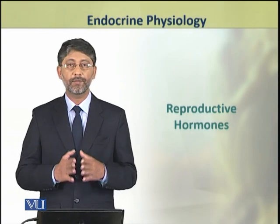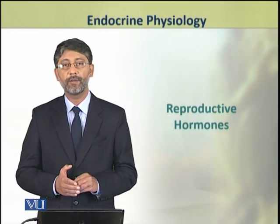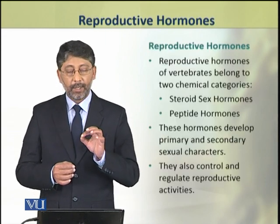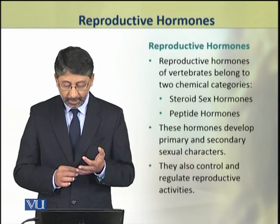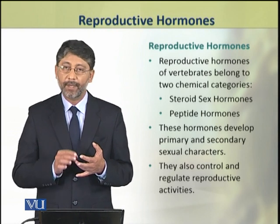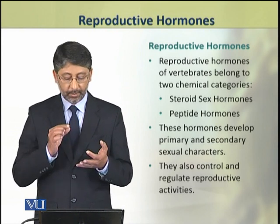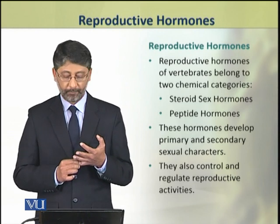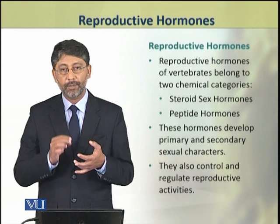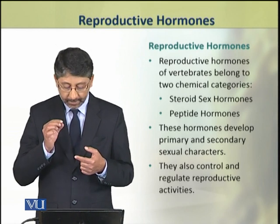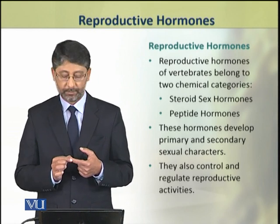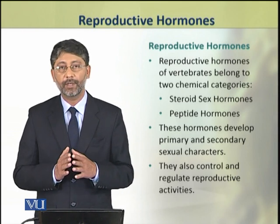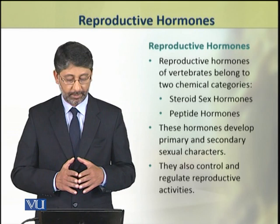Dear students, in this topic we shall discuss the reproductive hormones in detail. The reproductive hormones of vertebrates belong to two chemical categories: steroid sex hormones and peptide hormones. These hormones develop the primary and secondary sexual characters. They also control and regulate reproductive activities of animals.